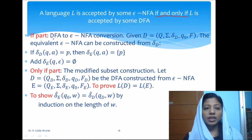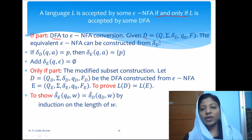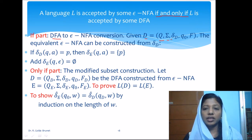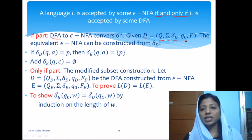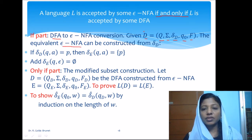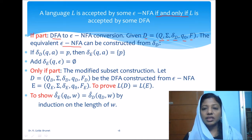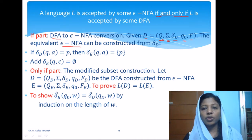In this conversion, a DFA D is given with a finite set of states Q, finite set of input symbols sigma, finite set of transitions delta D, starting state Q naught, and a finite set of accepting states. We have to construct an equivalent epsilon-NFA from this DFA D. The epsilon-NFA will have the same set of states and the same input symbols as the DFA.